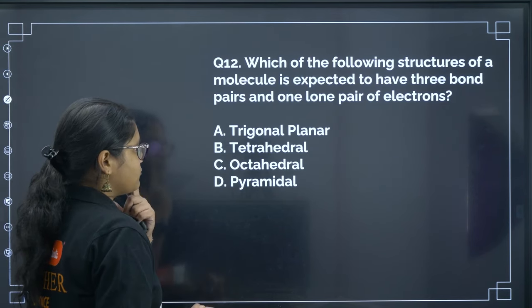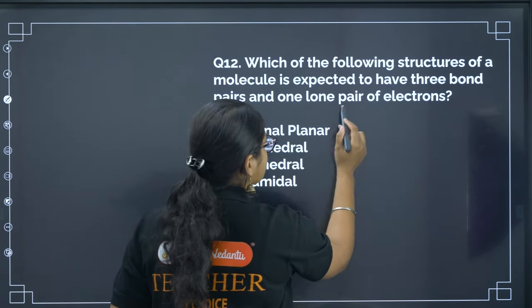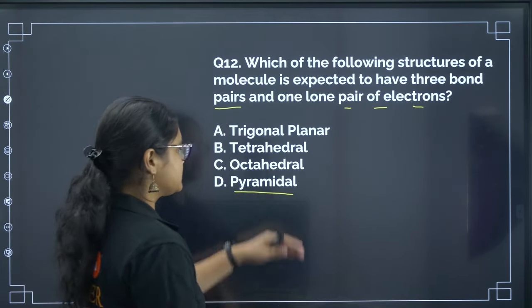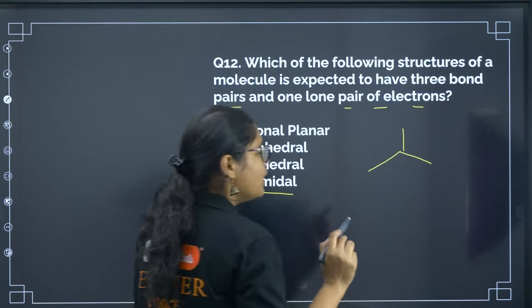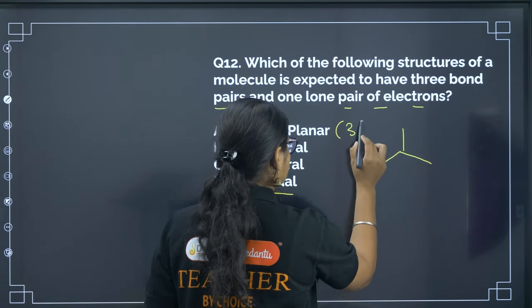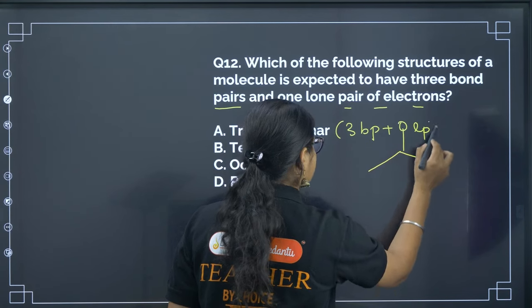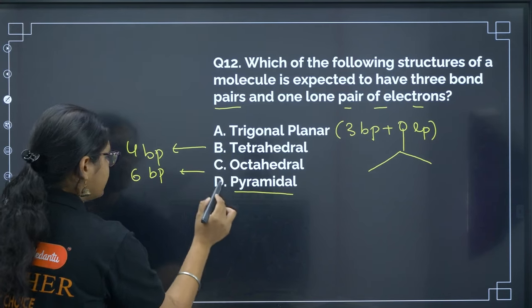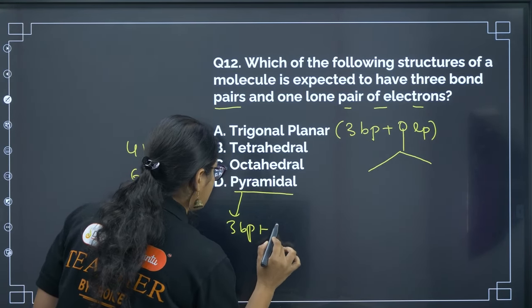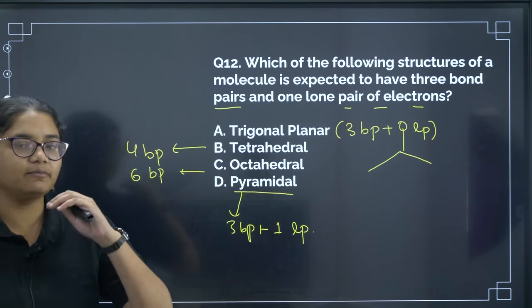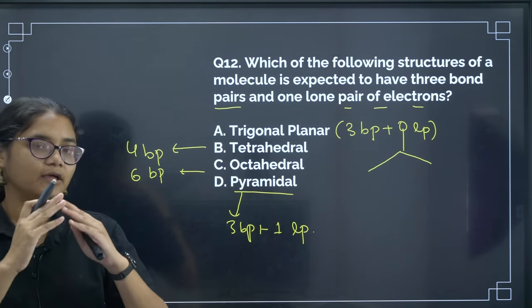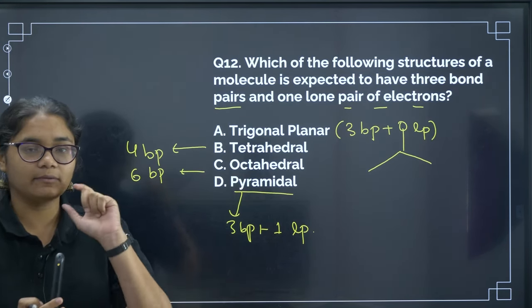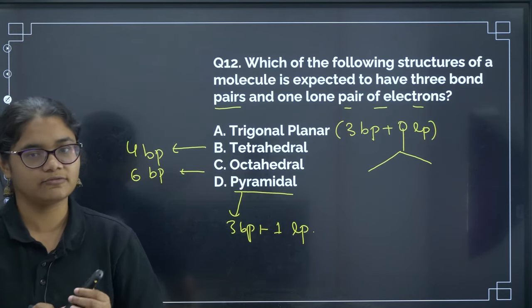Next: which molecular structure has 3 bond pairs and 1 lone pair? That corresponds to pyramidal shape. Quick reference: trigonal planar = 3 bond pairs + 0 lone pairs; tetrahedral = 4 bond pairs; octahedral = 6 bond pairs; pyramidal = 3 bond pairs + 1 lone pair. These are very basic VSEPR concepts — learning the full VSEPR table thoroughly is more than enough for the exam.